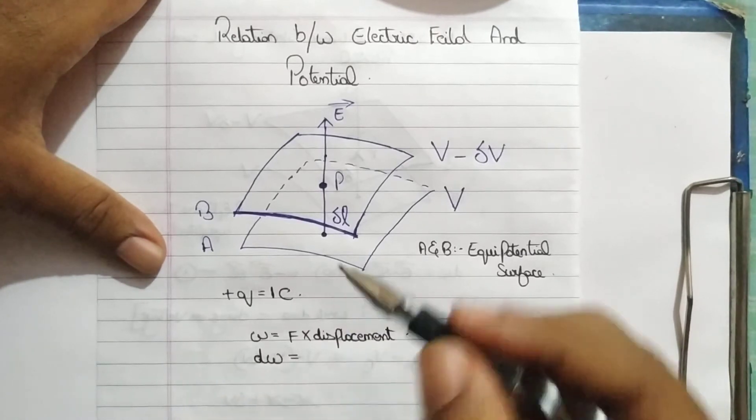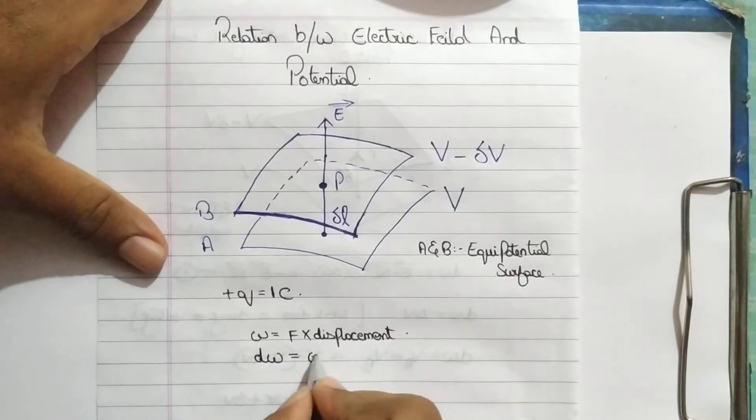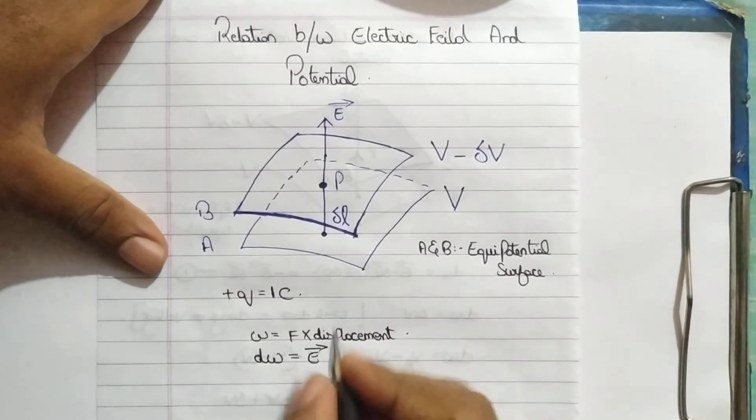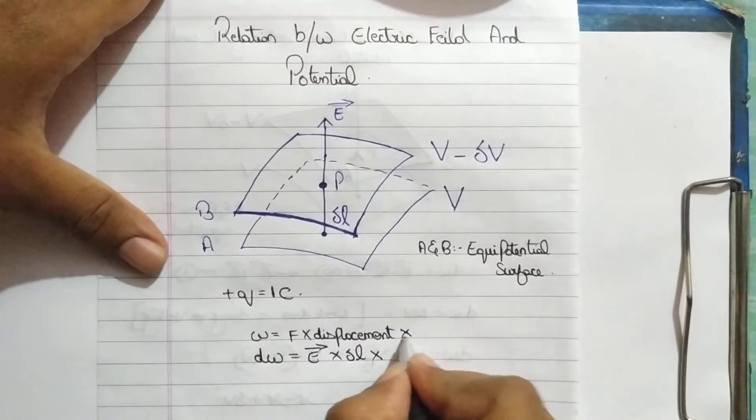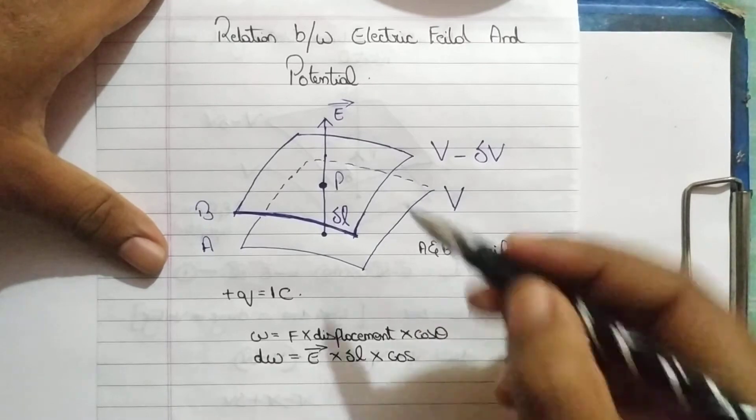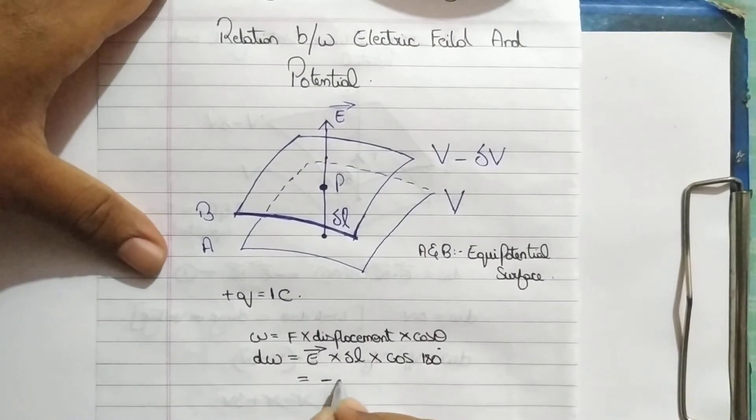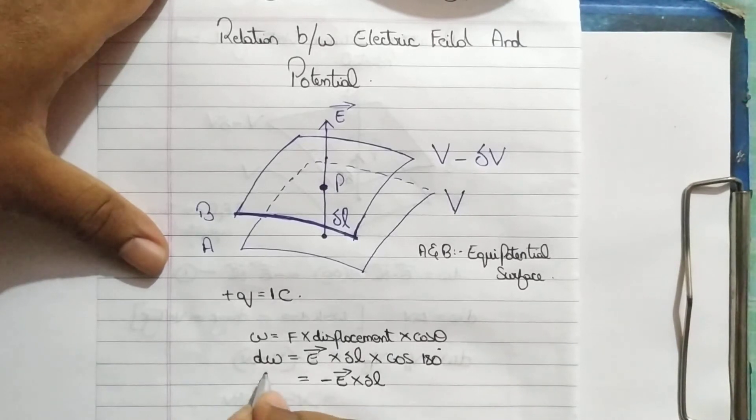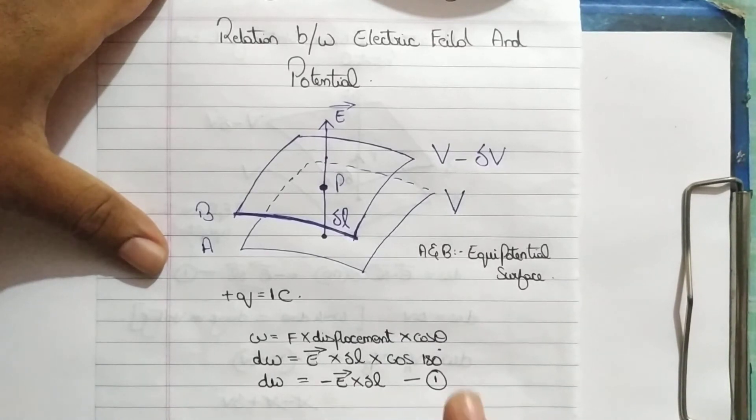Now, the work done by a test charge, considering the small work delta W, the test charge is so small. The small work done by a charge is nothing but force, what is force here? The force is electrostatic force into what is displacement here? That is nothing but perpendicular distance delta L. And as you all know, there is also a cos theta element. We are considering cos theta and what is theta? Theta is the opposite direction, 180 degrees. This equation reduces to minus because cos 180 is minus 1, minus E into delta L. This is the work done of the test charge in the first case.